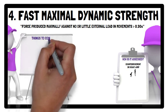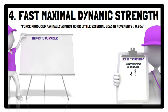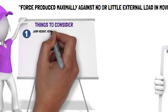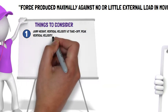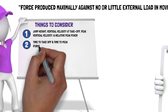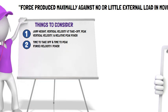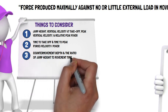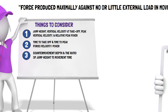There are a number of things to consider with regards to which metrics to track. Because most of the variation in counter movement jump performance can be explained with two to three metrics, it is recommended to select one variable from each of the following factors. Factor one: jump height, vertical velocity at takeoff, peak vertical velocity, or relative peak power. Factor two: time to takeoff, time to peak force, time to peak velocity, or time to peak power. Factor three: supplementing these with counter movement depth and the ratio of jump height to movement time to better understand what occurred in the jump.